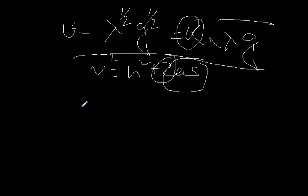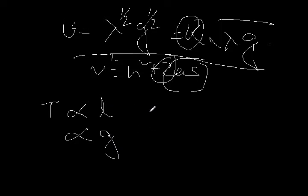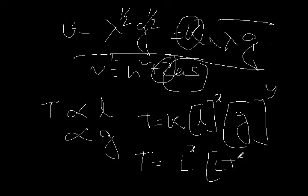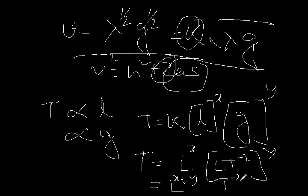Now consider another example: the time period of a pendulum is directly proportional to length L and directly proportional to acceleration due to gravity G. We already know what to do. We write T equals K·Lˣ·gʸ, assigning power X to L and power Y to G. So T equals L to the power X times (L·T⁻²) to the power Y, giving L a combined power of X plus Y and T a power of minus 2Y.